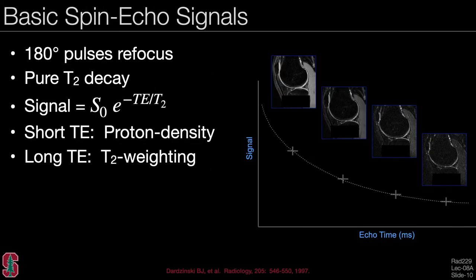The 180 degree pulses refocus magnetization to give a pure T2 decay. The signal over this decay equals the initial signal times e to the minus TE over T2. With a short echo time there will be very little difference between tissues of different T2, giving proton density contrast. With a long echo time, we get T2 weighting with contrast based on T2 — as seen in these images showing different amounts of contrast between fluid, muscle, and cartilage at different echo times.